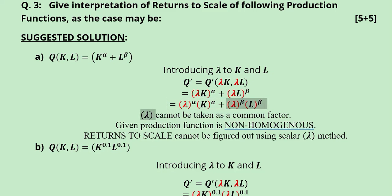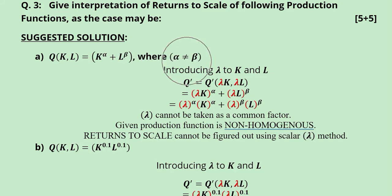There is one possibility: if α equals β, we could factor out lambda completely and the function would be homogeneous. But assuming α is not equal to β — which is the general case — we cannot do so. Therefore it is a non-homogeneous production function, and returns to scale cannot be determined using this scalar lambda method. This parametric stipulation is added as a caveat: if α ≠ β, the function remains non-homogeneous.